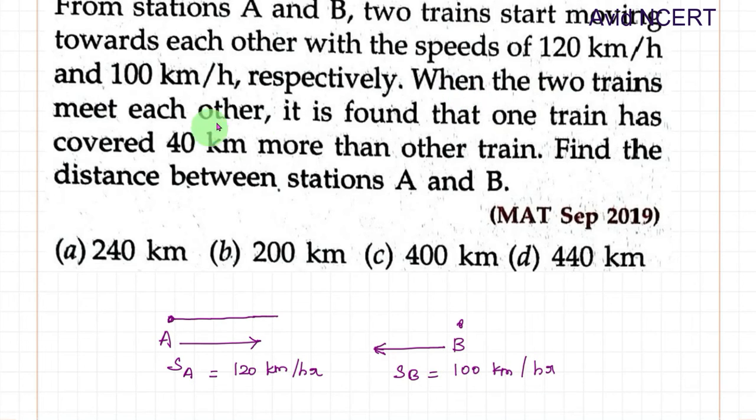Next sentence is, when the two trains meet each other, it is found that one train has covered 40 km more than train B. So distance of train A is, since it is travelling with the higher speed, 120 km per hour, whereas train B's speed is 100 km, we can take that this train has covered 40 km more than that.